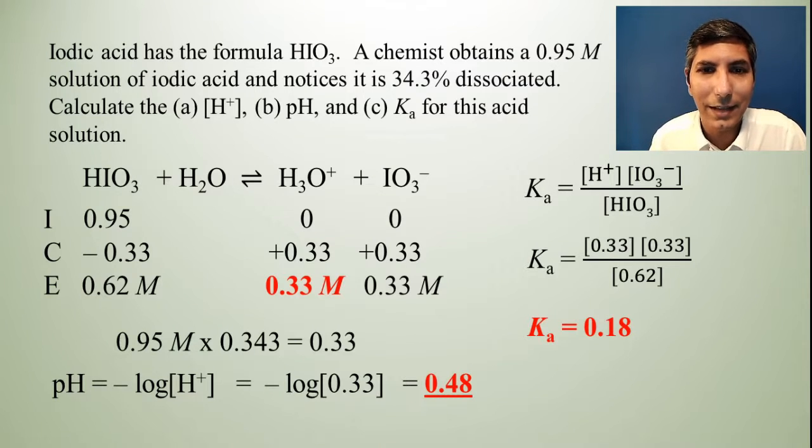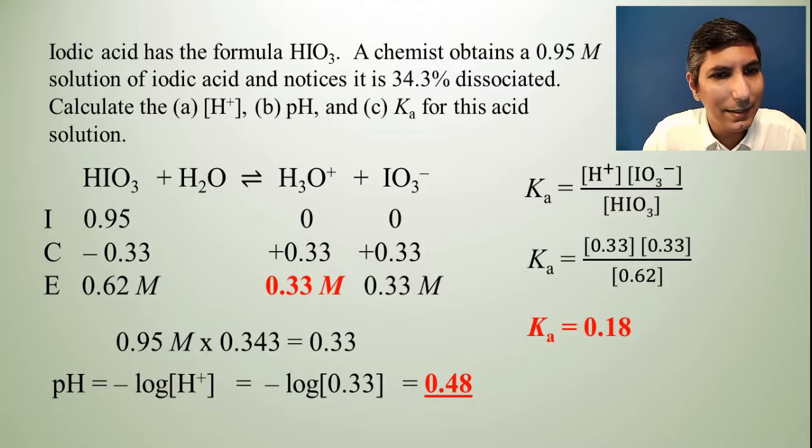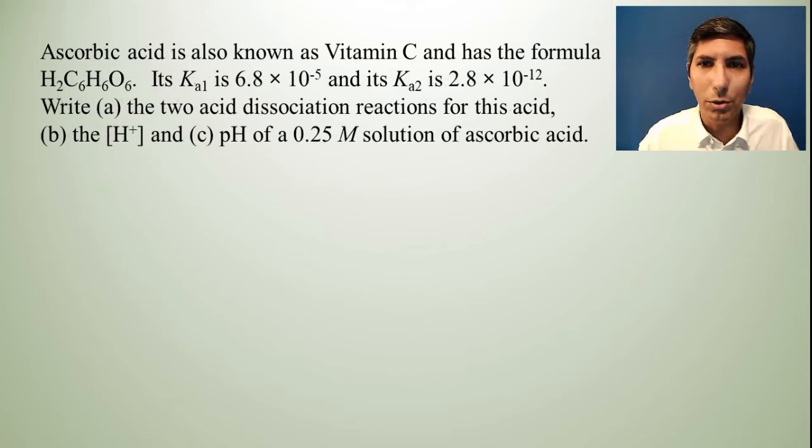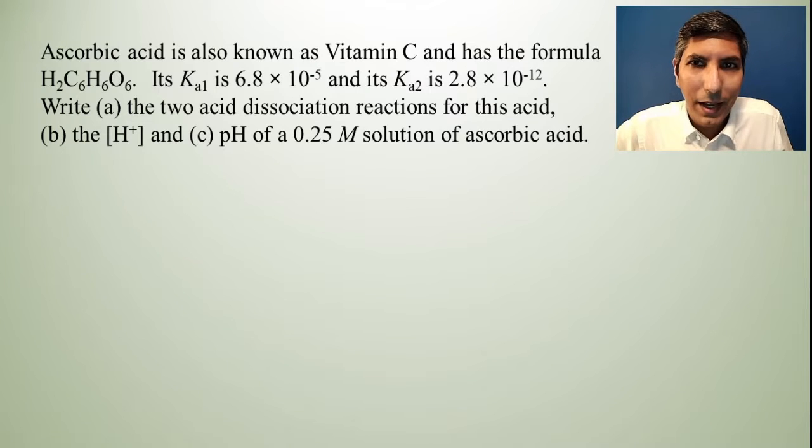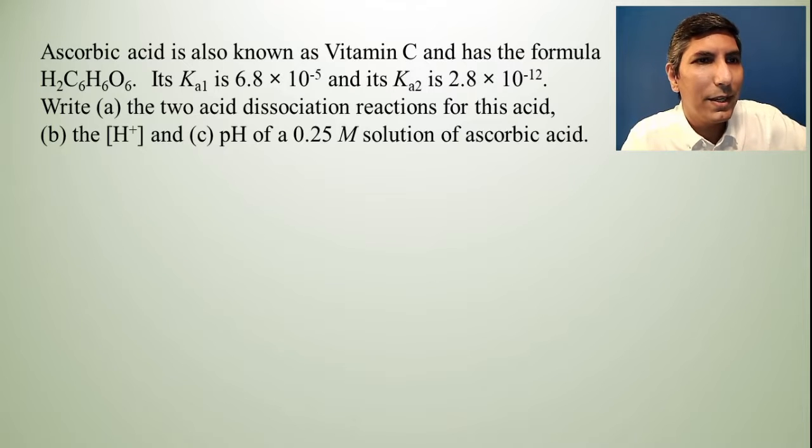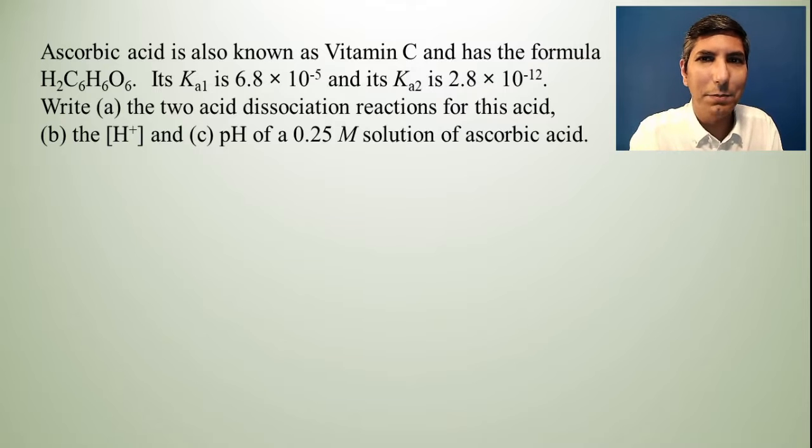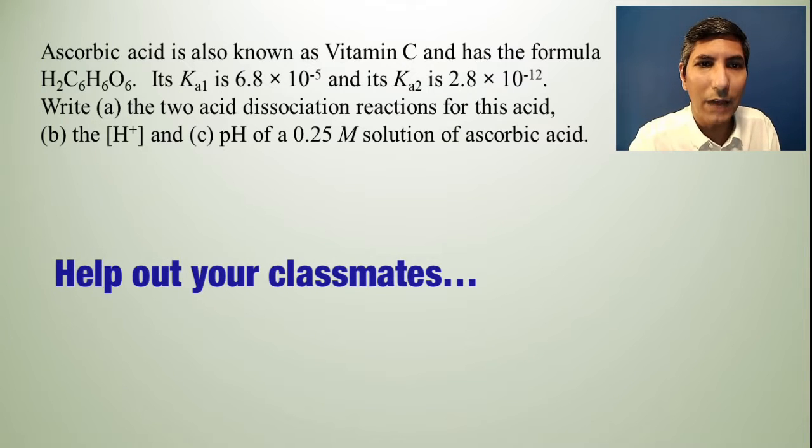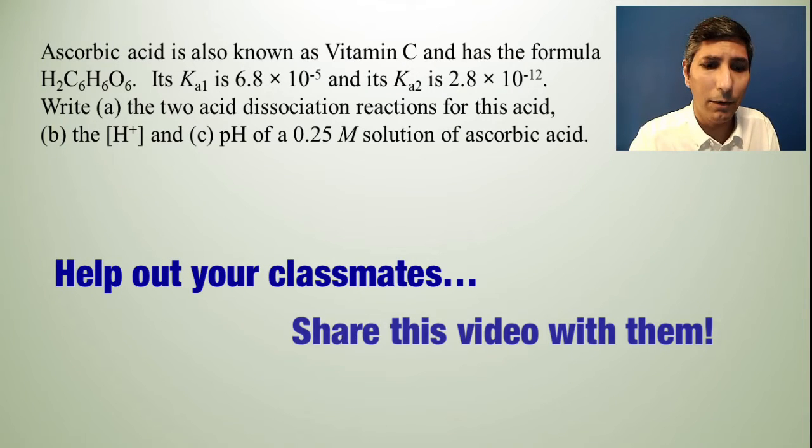So that's a second example. Let's try one more example for weak acids and this one is a little bit more peculiar. Here we're working with vitamin C. Ascorbic acid is also known as vitamin C and has the formula H2C6H6O6. Its Ka1 is 6.8 times 10 to the negative fifth and its Ka2 is 2.8 times 10 to the negative 12. Write the two acid dissociation reactions for this acid, the H+ concentration, and the pH of a 0.25 molar solution of ascorbic acid.